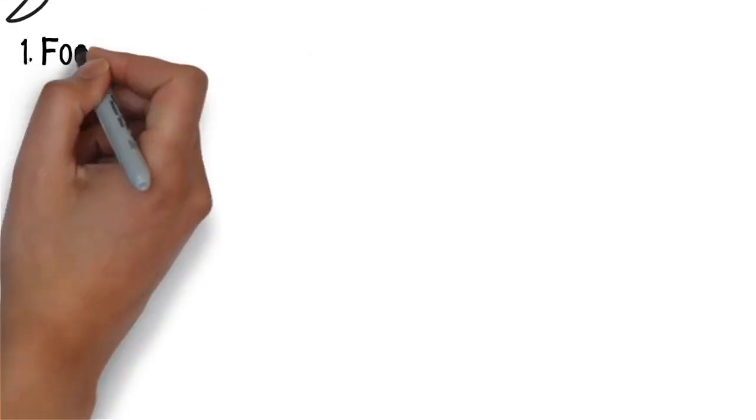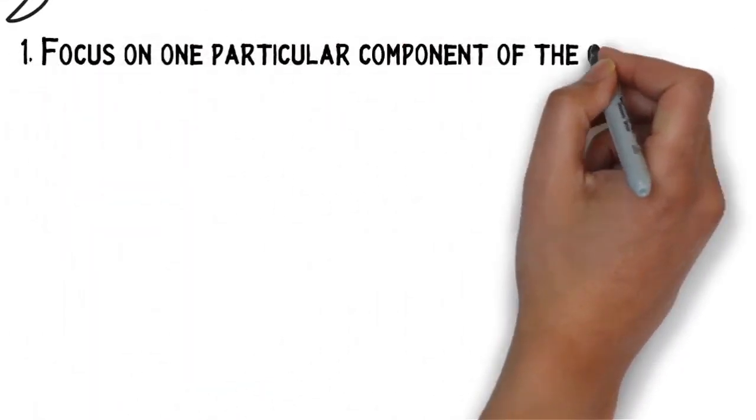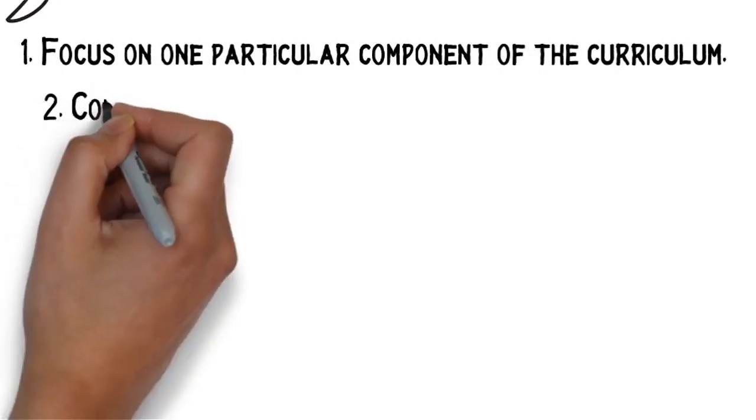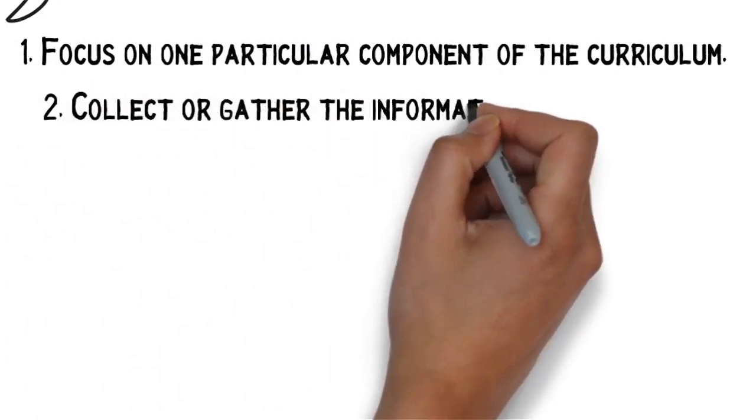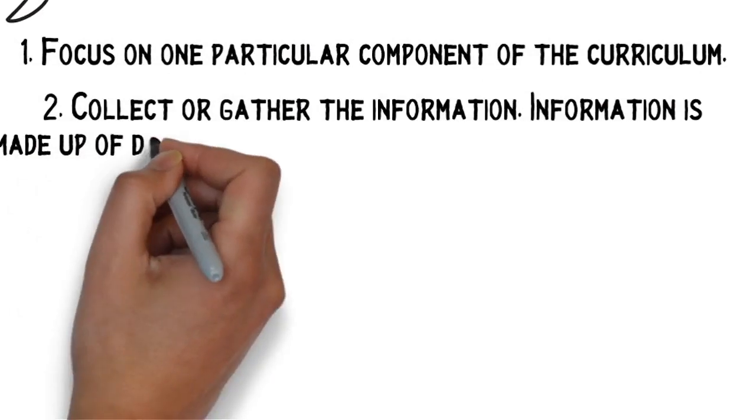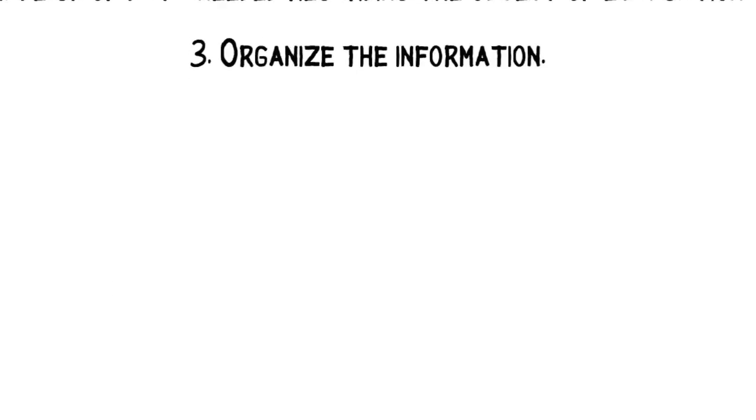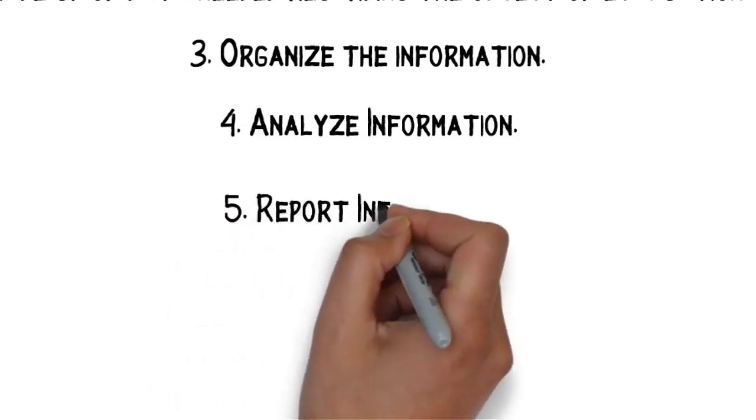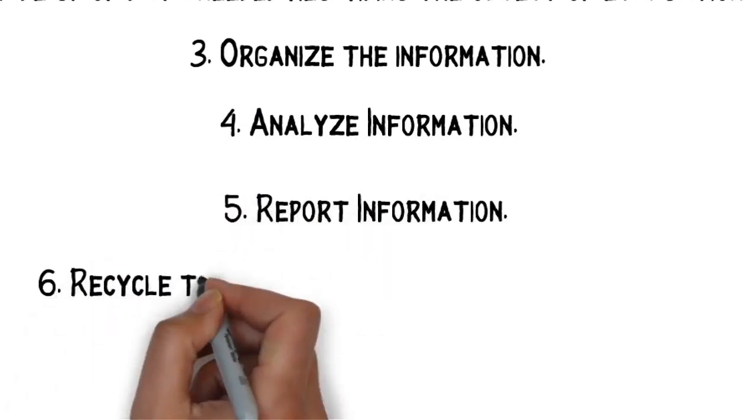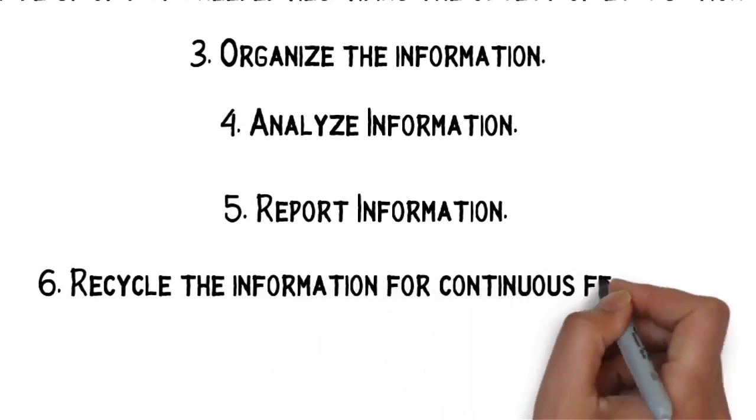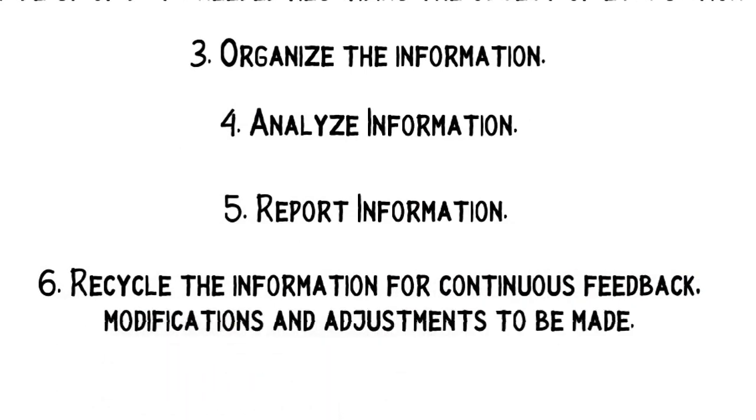These are the steps. Number one, focus on one particular component of the curriculum. Number two, collect or gather the information. Information is made up of data needed regarding the object of evaluation. Number three, organize the information. Number four, analyze information. Number five, report the information. And number six, recycle the information for continuous feedback, modifications, and adjustment to be made.